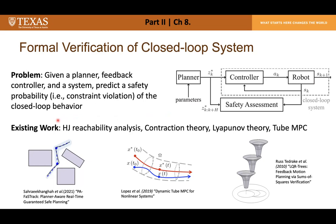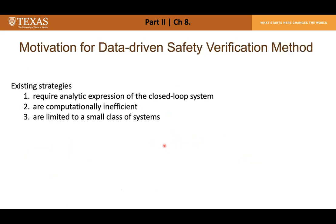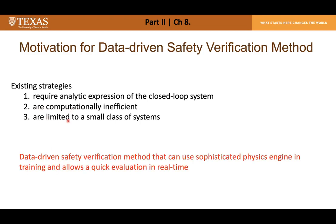Existing works such as Hamilton-Jacobi reachability analysis, contraction theory, and tube-based MPC address this formal verification problem through offline characterization of tracking error bounds and safety certification for all realizations of uncertainty. However, these strategies all require analytic expressions of the closed-loop system, are computationally inefficient, and are limited to a small class of systems. This chapter instead aims to study a data-driven safety verification method using a sophisticated physics simulator rather than an analytic expression, allowing quick real-time evaluation.